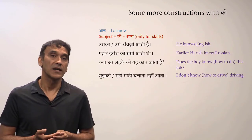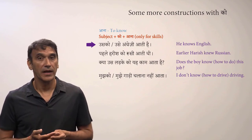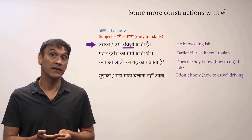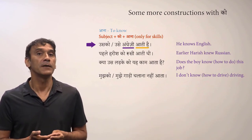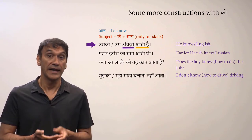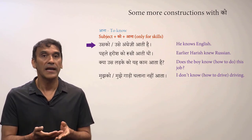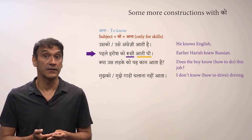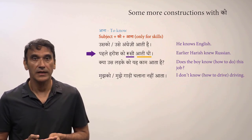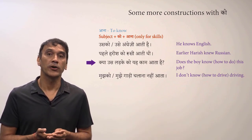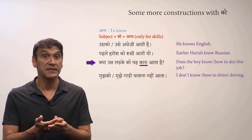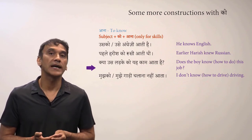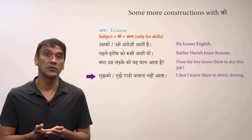Let's take some examples. 'Usko/usse angrezi aati hai' — he knows English. Knowing English is a skill, and English is a feminine noun — all languages are feminine — so 'aati hai' is used. 'Pehle Harish ko Rusi aati thi' — earlier Harish knew Russian. Russian is feminine, so 'aati thi' in the past. 'Kya us ladke ko ye kaam aata hai?' — does the boy know this job? 'Kaam' is masculine, so 'aata hai.' 'Mujhe gaadi chalana nahi aata' — I don't know how to drive.